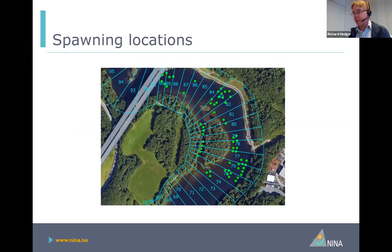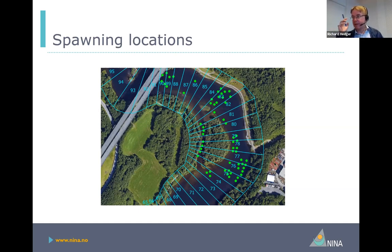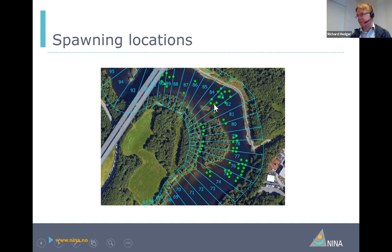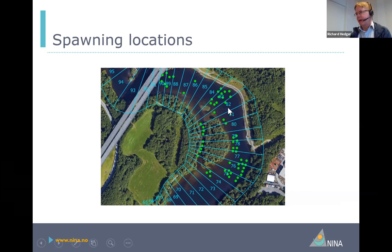For the spatial distribution of salmon, we begin by looking at spawning locations, which have been surveyed in this river. The survey data are about 10 years old, but we don't think there'll have been a massive difference in spawning locations. The green circles in this image are individual spawning sites that have been surveyed on the ground — surveyed by NTNU. This is where the salmon population begins in our model, and from here we want to redistribute this population throughout the river.